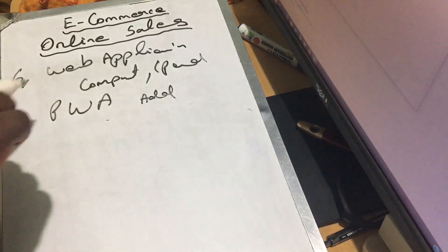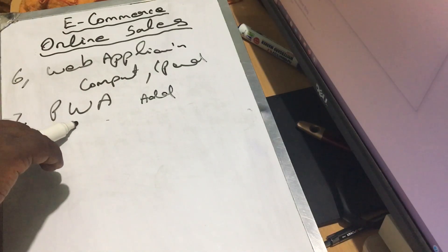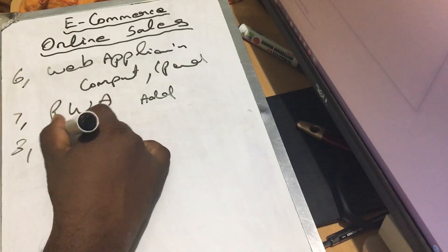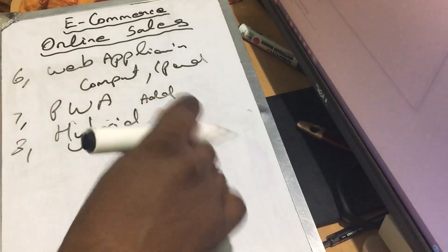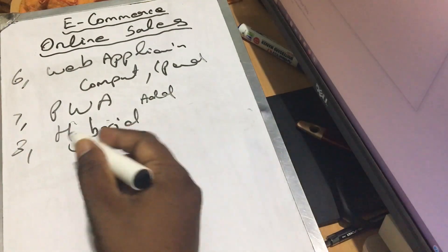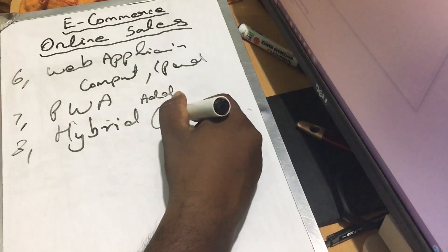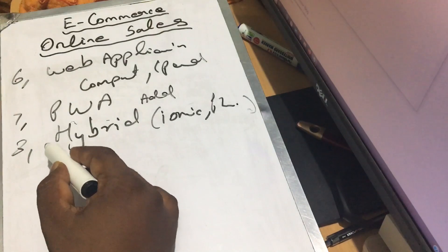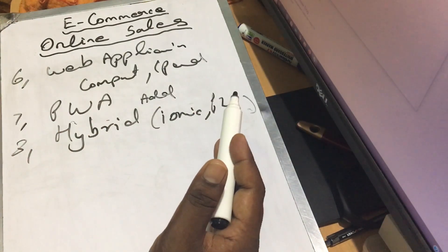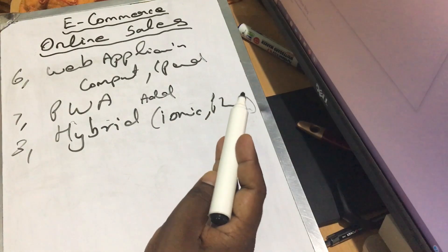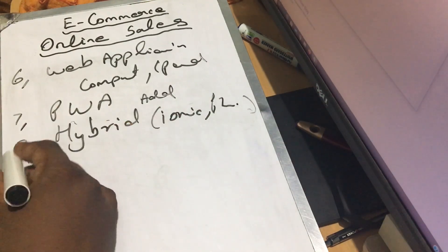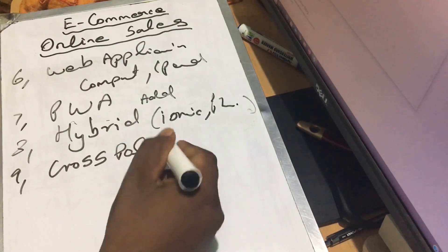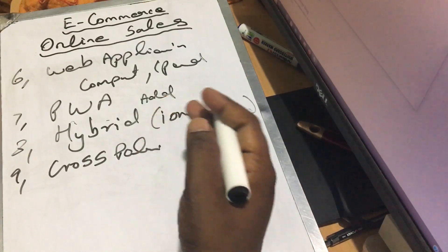If you have a mobile application, you will be able to do a Progressive Web Application. However, if you use a hybrid application, you will be able to target both iOS and Android. Because of hybrid applications, you can convert it as a mobile application using cross-platform development — supporting both iOS and Android.